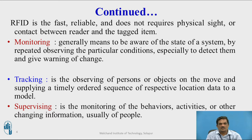RFID is usually used to monitor, track, and supervise objects in a system. RFID means being aware of the state of the system by repeatedly observing particular conditions, especially to detect them and give warning of change. If any change happens in a particular proximity area or environmental conditions, that information will automatically be monitored by the RFID system. It also tracks the movement of particular objects and records a timely ordered sequence of respective location data. It also supervises the monitoring of behaviours, activities, or other changing information of people or objects.